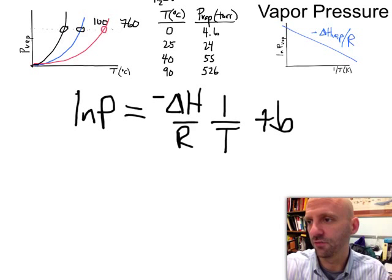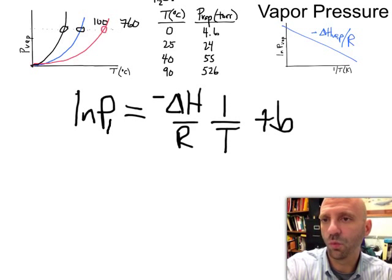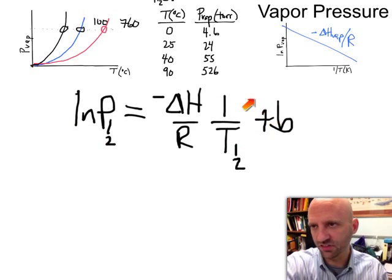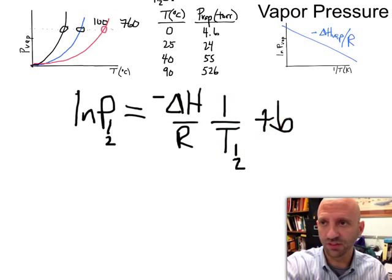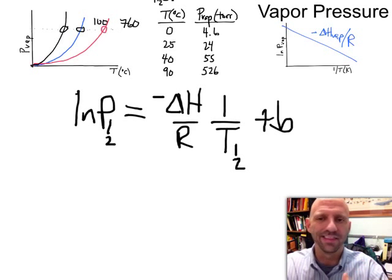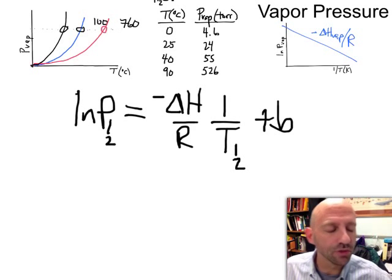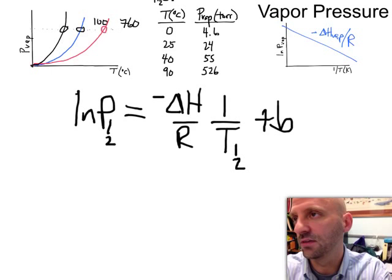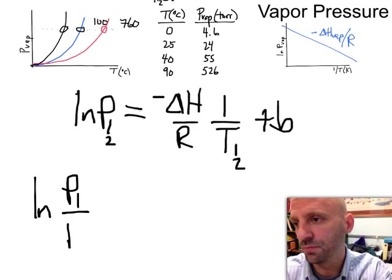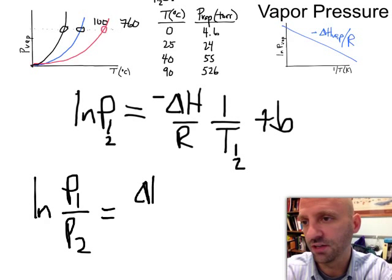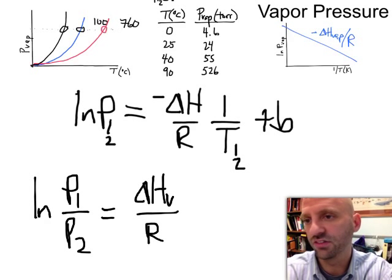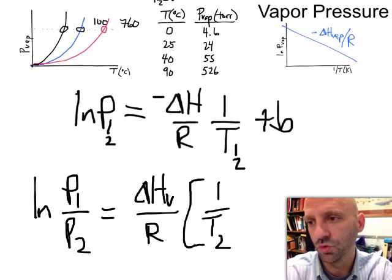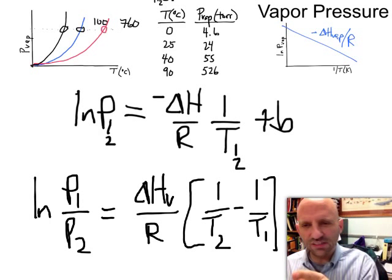Now, what if I play around with this data? What if I have one vapor pressure at one temperature, and another vapor pressure at another temperature, and I write this equation down twice, so ln p1 equals delta h over r times 1 over t1 plus b. Natural log p2 equals delta h over r times 1 over t2 plus b. So I write that equation twice, and then I take the difference between the two equations. I'm going to get a relationship whose shape should look darn familiar to us. I'm going to get something that's going to look like this.